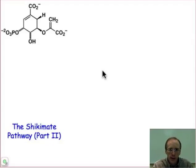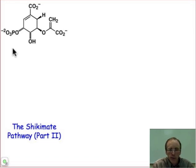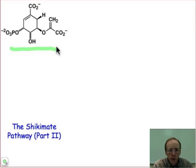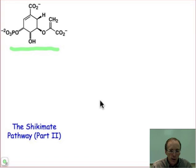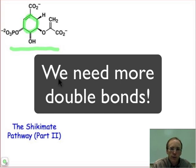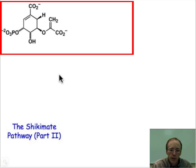We ended the last webcast, part one of the Shikimate pathway, by showing how the three building blocks came together and produced this molecule, enopyruvate shikimate phosphate. And now we want to see how this transforms first into prephenate, and then from there to the aromatic amino acids, phenylalanine and tyrosine. So we have to introduce greater degrees of unsaturation, meaning that we need to transform this highly functionalized molecule into a benzene ring.